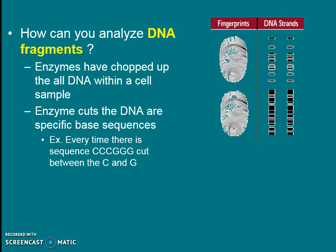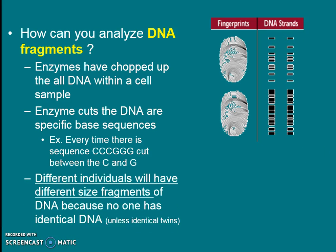For instance, this enzyme might cut every time it sees the sequence CCC-GGG, and it will always cut right where the C and the G meet. Where this sequence appears in my 46 chromosomes will be slightly different from where it appears in your DNA sequences, and that will produce different lengths or sizes of fragments. Imagine karate chopping in different places along a long string — the pieces end up being slightly different sizes. The only people who have the same exact fragment sizes are identical twins.